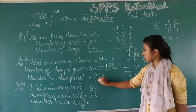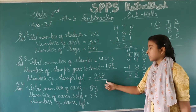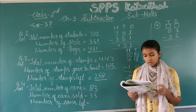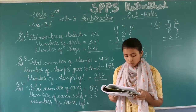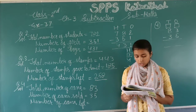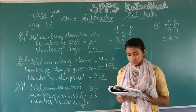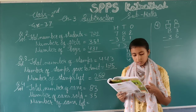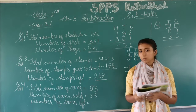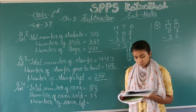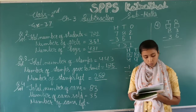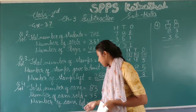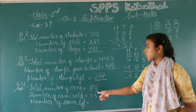Now the fourth question: a shopkeeper had 83 cans of coke. He sold 35 cans. How many cans are left with the shopkeeper? You know what a shopkeeper is — someone who runs a shop. So how many cans are left with the shopkeeper? Let's begin solving it.